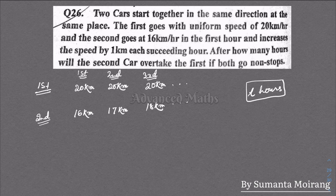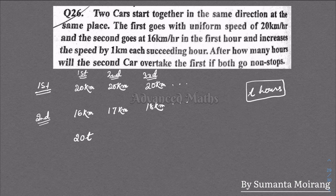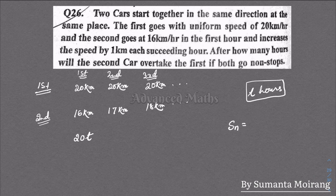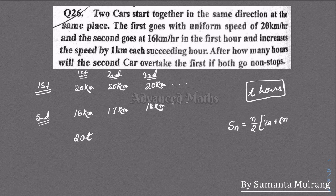For the second car, the total distance uses the arithmetic progression formula: n/2 times [2a + (n-1)d].